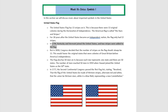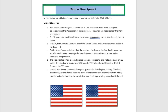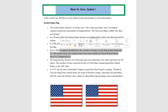Then in 1794, Kentucky and Vermont joined the United States, and two stripes were added to the flag. But in 1818, Congress decided that the number of stripes on the flag should always be 13, just to honor the original states that were colonies of Great Britain before American independence.